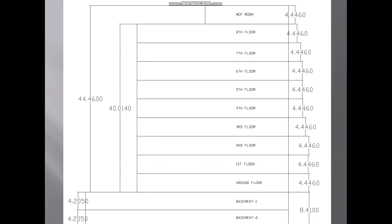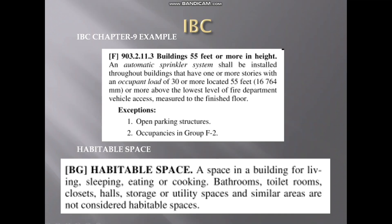Let me show you the International Building Code definition for habitable space. It is a space in a building for living, sleeping, eating, or cooking. But spaces like bathrooms, toilet rooms, storage, and utility spaces and similar areas are not considered as habitable space.